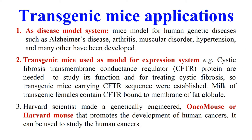Transgenic mice have several applications. They can be used as a disease model to study human genetic diseases like Alzheimer's, arthritis, muscular disorders, and hypertension. Transgenic mice can also be used as a model expression system — for example, mice carrying the CFTR gene can be used as a model for cystic fibrosis. Harvard scientists also made a genetically engineered mouse known as the Onco mouse or Harvard mouse, which promotes the development of human cancer and can be used to study human cancers.